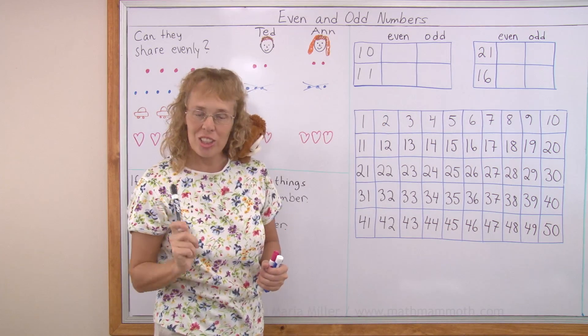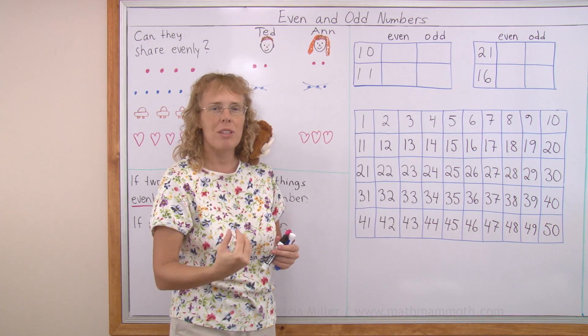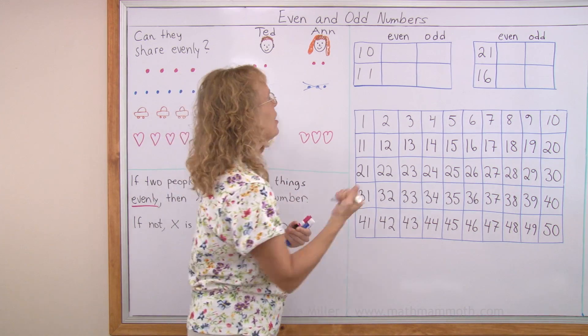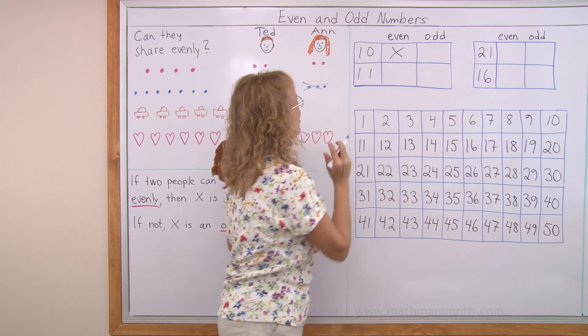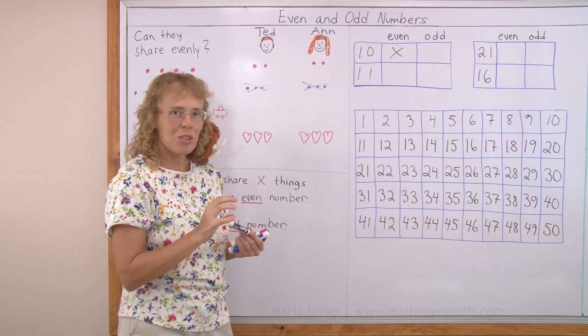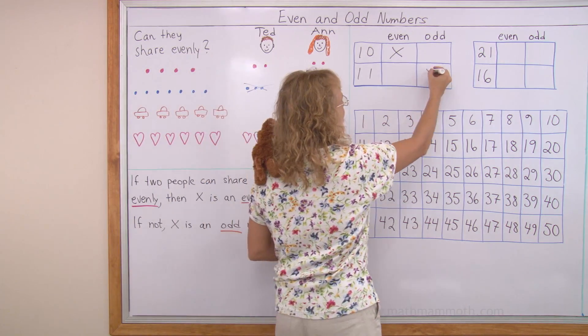Is ten an even or odd number? If you have ten things, can you share evenly with your friend? Yes, you can, because you can have five and five. So, it's an even number. How about eleven? Well, eleven is just one more than ten. Ten you could share evenly, but if you have one more than that, then you cannot share evenly. You would have one left over.